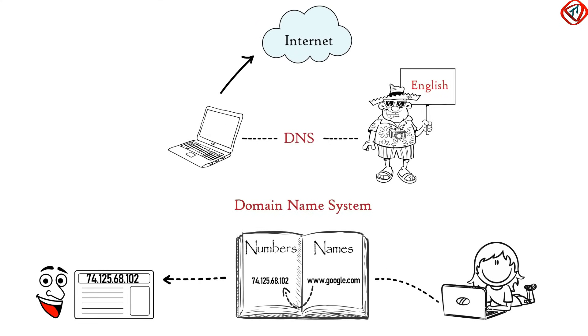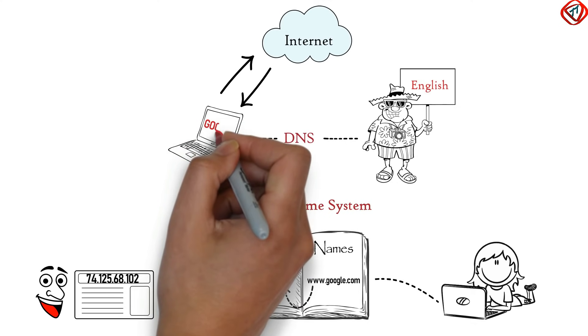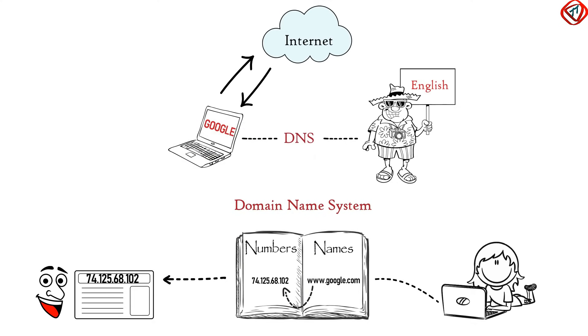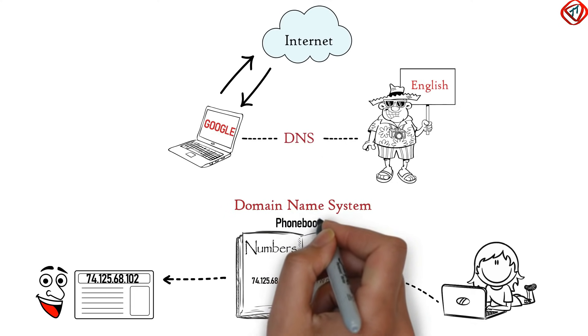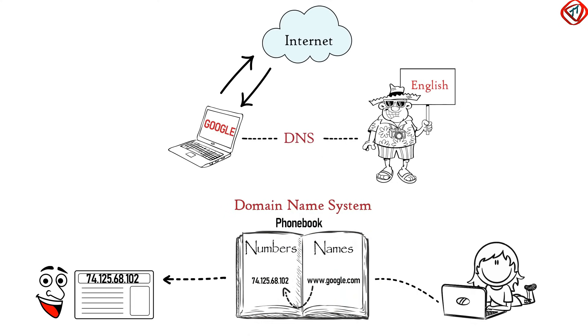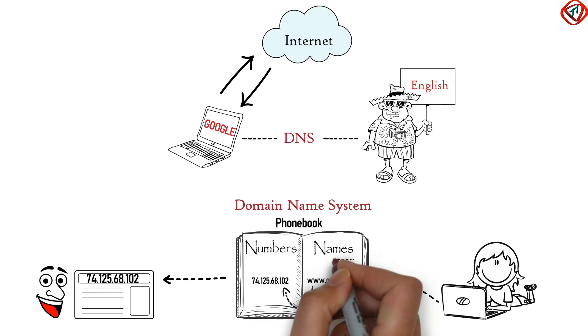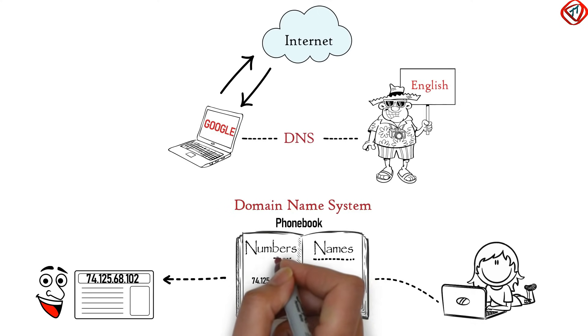The web browser understands that we want to access google.com, so it contacts the Google server and loads google.com on the computer. In short, DNS acts as a phone book of the internet, where the computer searches with names to get numbers.